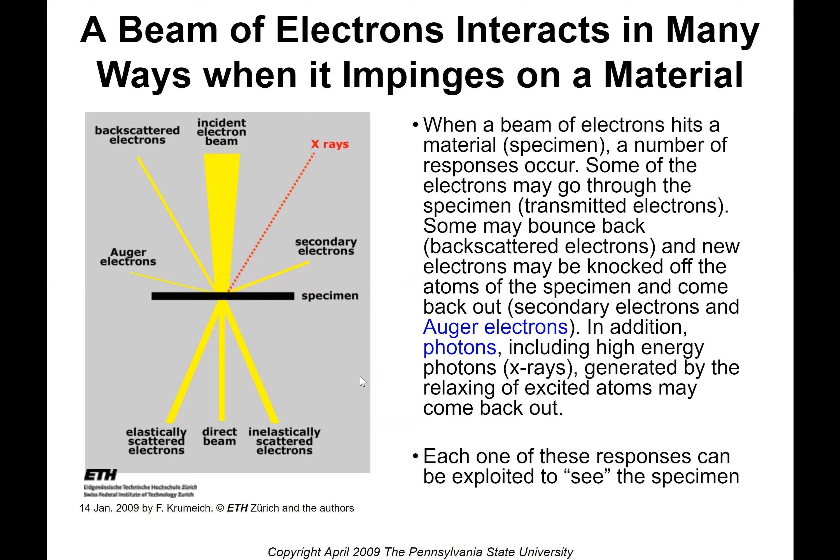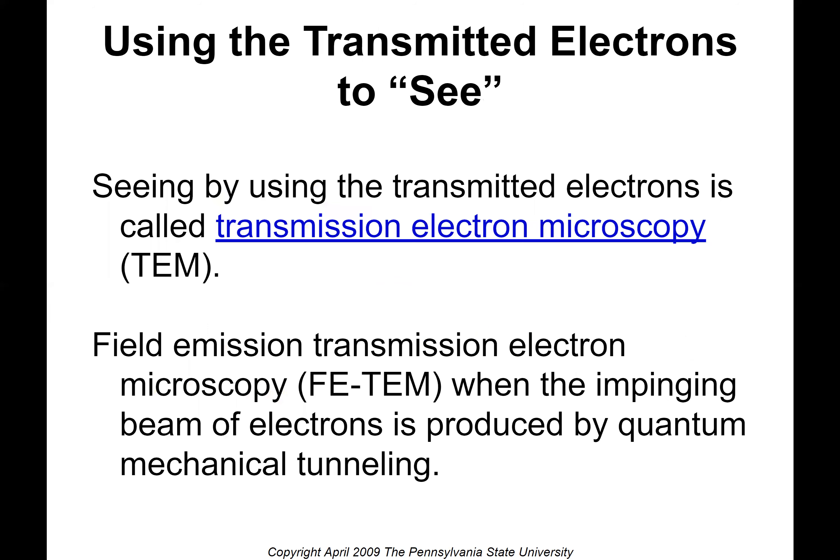Each one of these responses can be exploited to see the specimen — to give us information about a specimen at the nanoscale. Using transmitted electrons to see is called transmission electron microscopy, and the equipment is called a TEM, or transmission electron microscope. A special type, field emission transmission electron microscopy (FETM), is when the impinging beam of electrons is produced by quantum mechanical tunneling. The main thing to remember is: if the electrons are transmitted through the sample, it's called TEM.